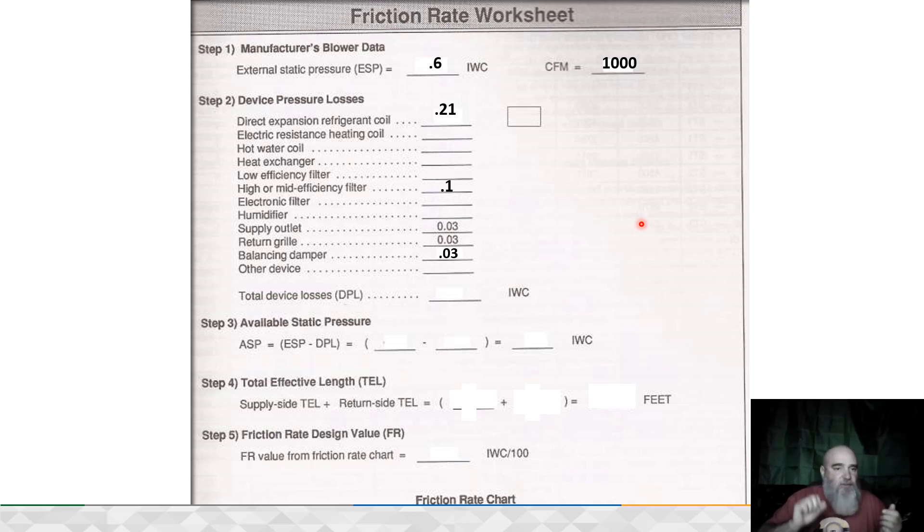There's no set friction rate. The 0.1s, the 0.08s that you frequently hear people saying—it's made up. Do you use beer can cold for checking the charge on a piece of equipment, or do you measure superheat and subcooling?